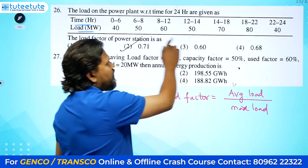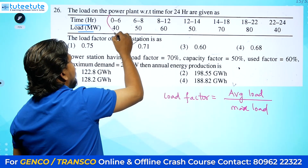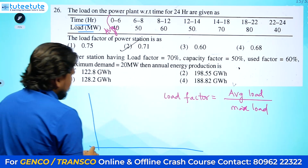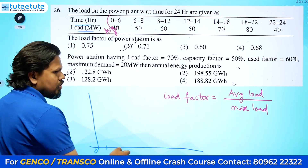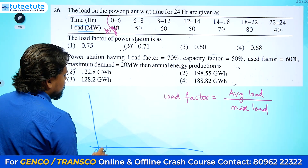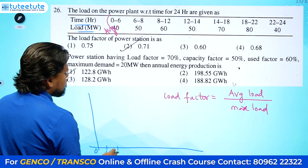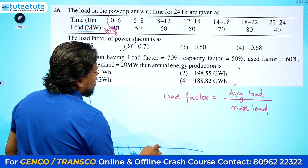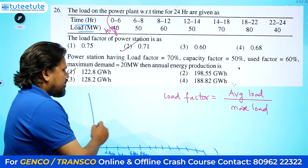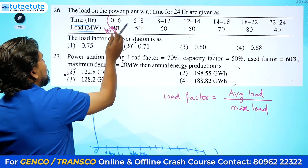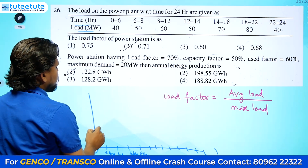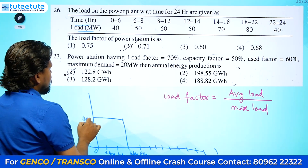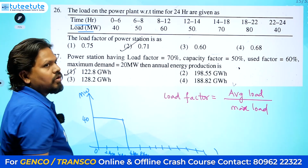To get the average load, you have loads of 40, 50, 60 MW at different times over 24 hours. You can draw the load curve for easy understanding. Starting from 0 hours, with a 2-hour gap: 2 AM, 4 AM, 6 AM, 8 AM and so on. From 0 to 6 AM, the load is 40 MW.